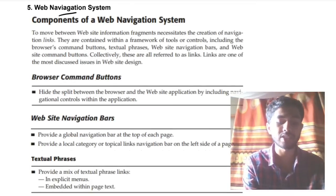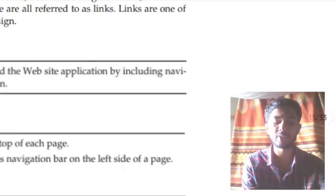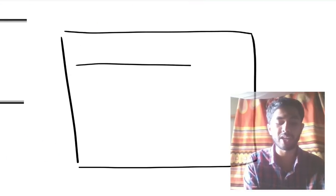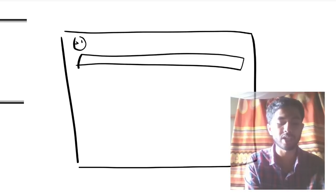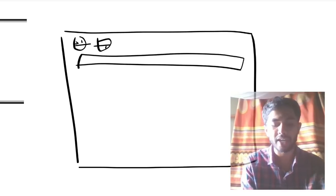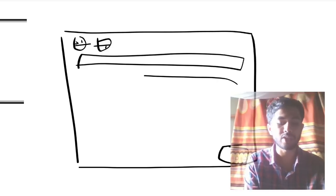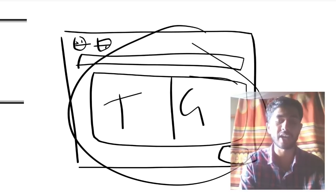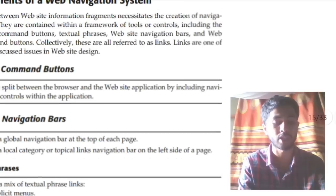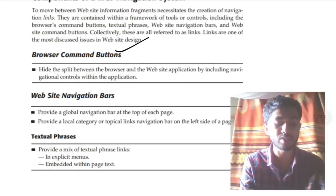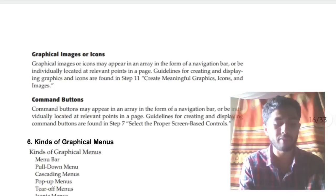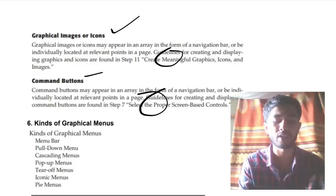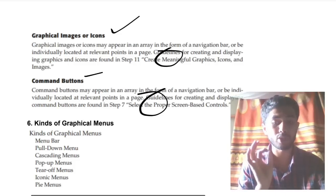The next super important question is about the web navigation system — specifically its components. A simple way to memorize: imagine a normal website. You have links, a back button called browser command buttons, a submit button called command button, and a content area with textual phrases and graphics. The components to remember are: browser command buttons, website navigation bars, textual phrases, graphical or textual image icons, and command buttons. This two-minute topic can easily get you eight marks.